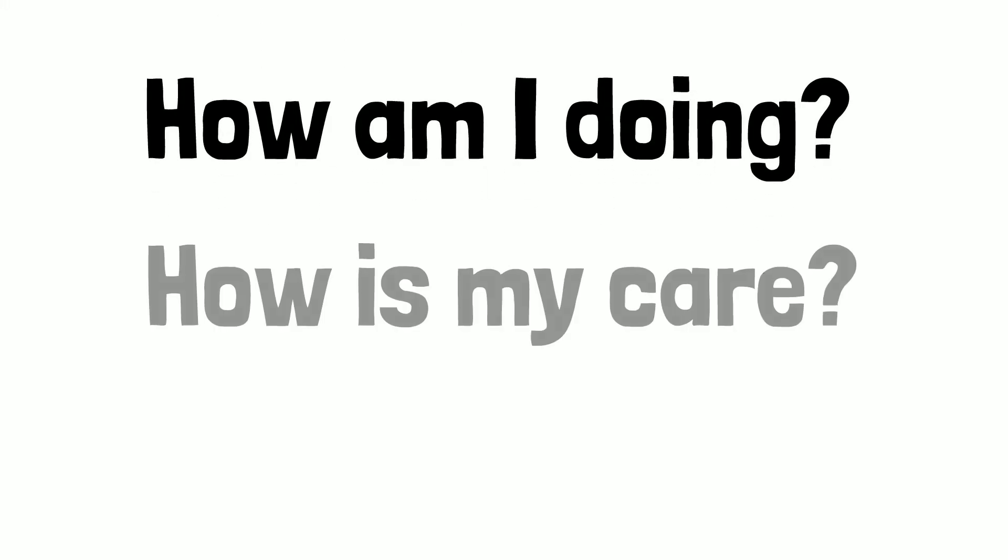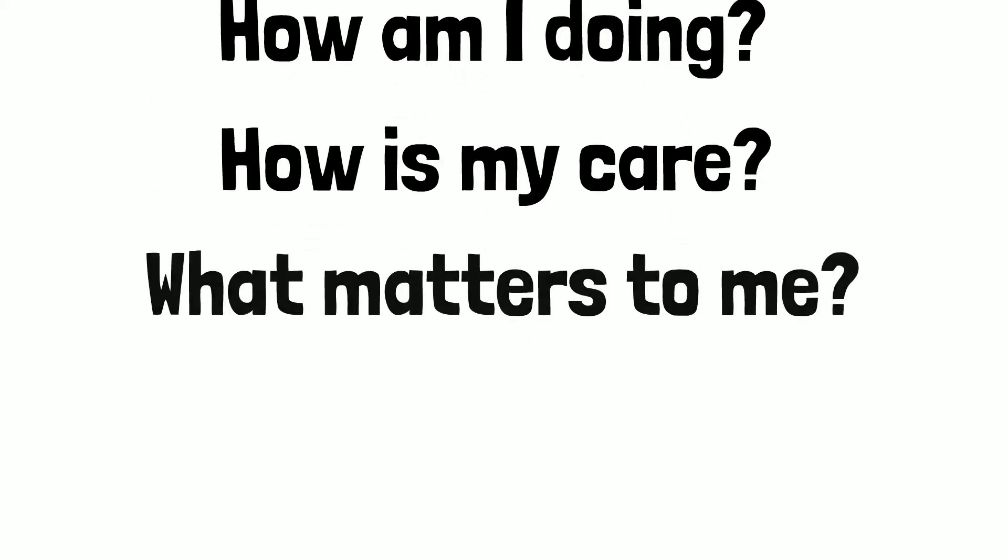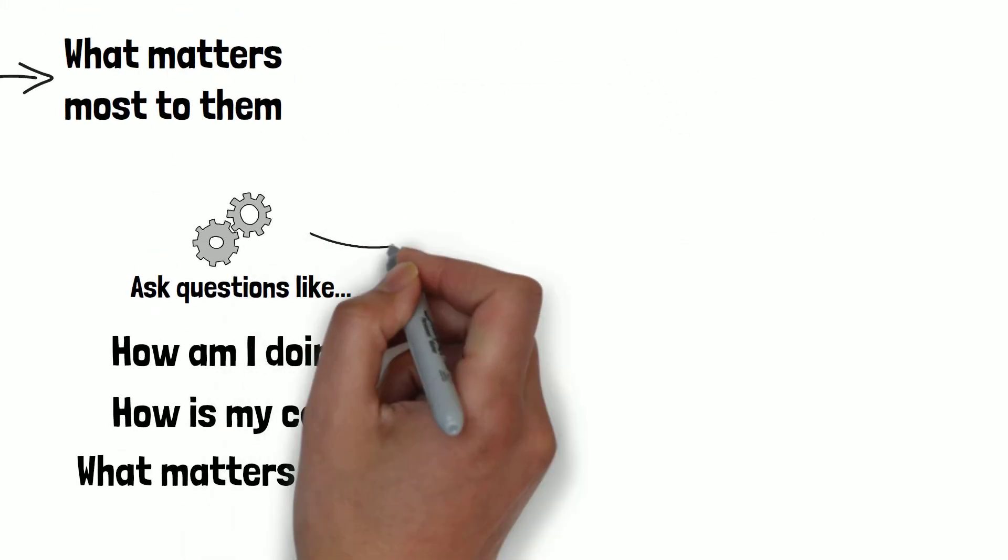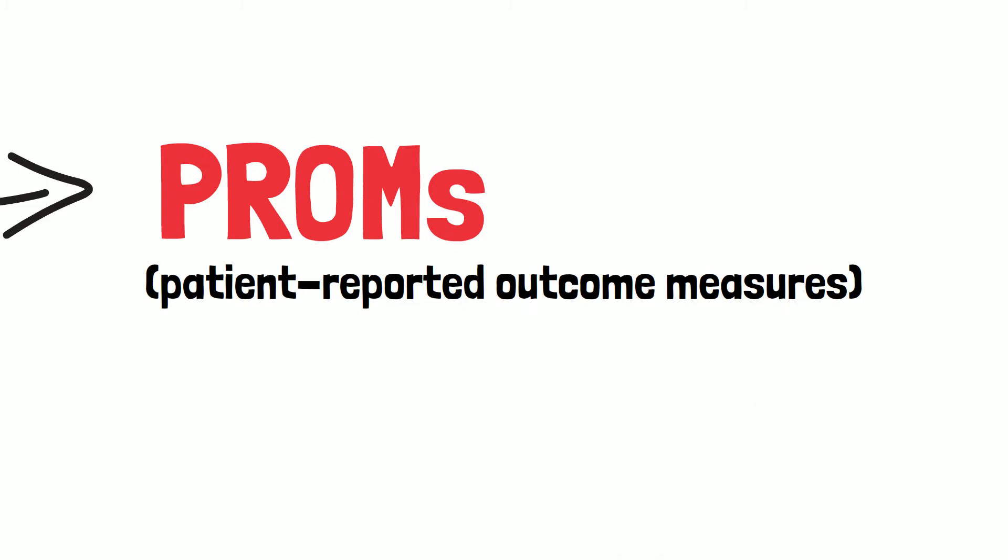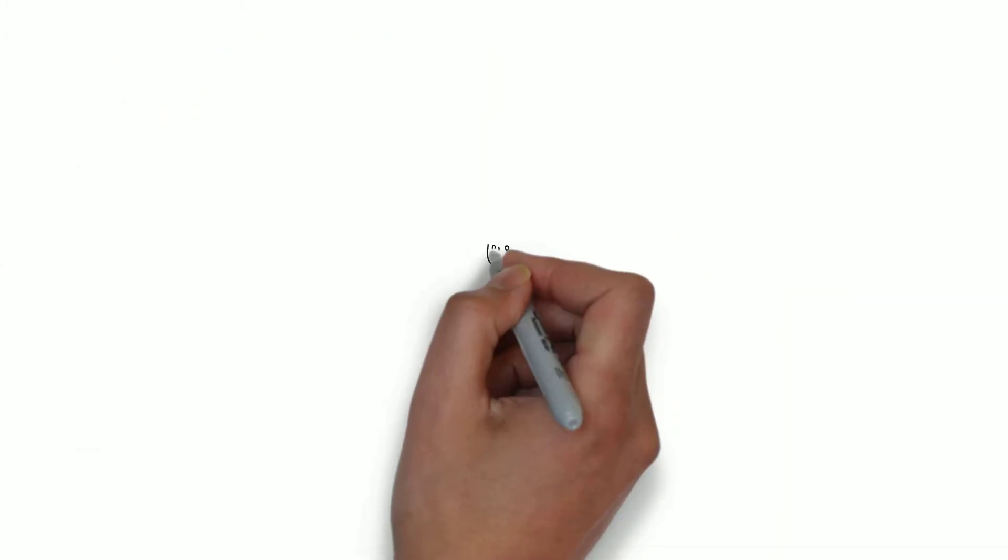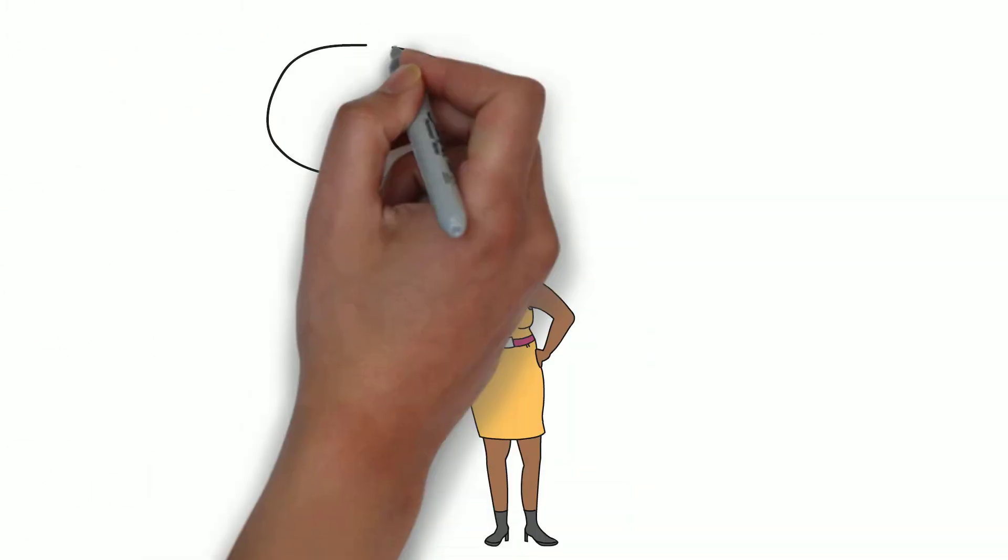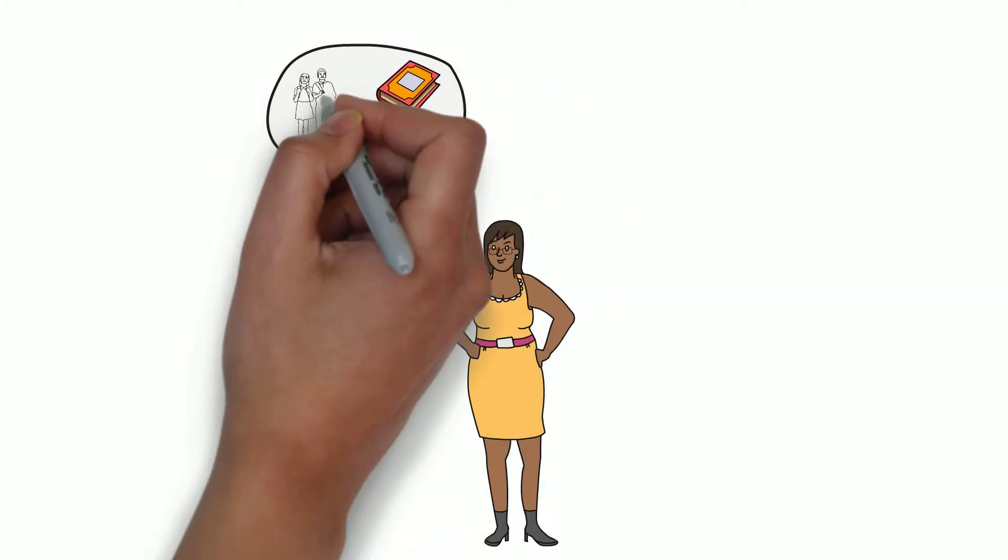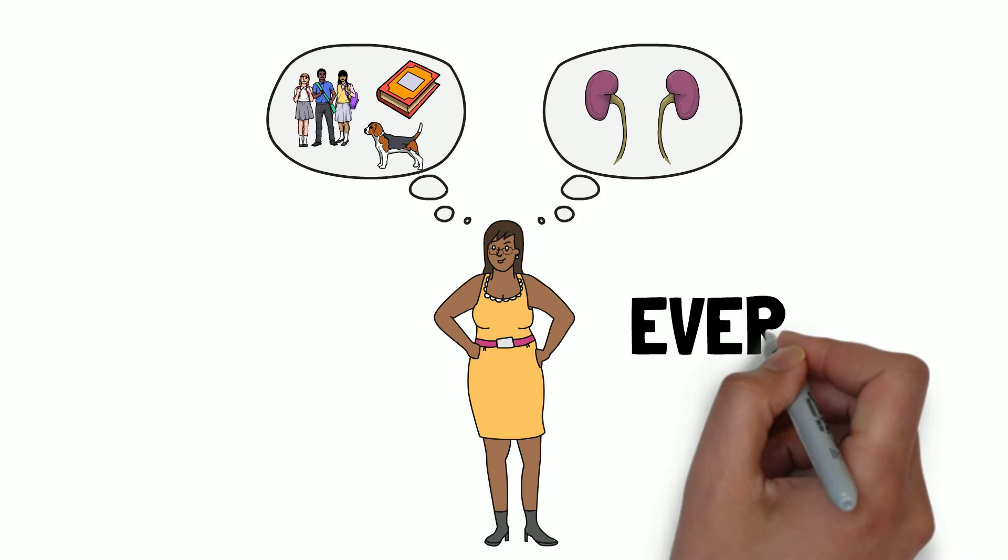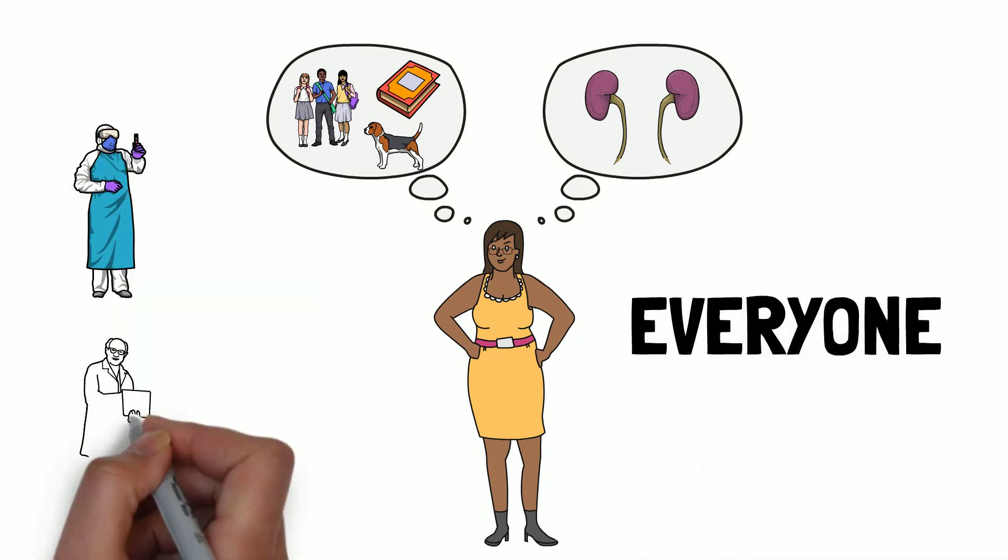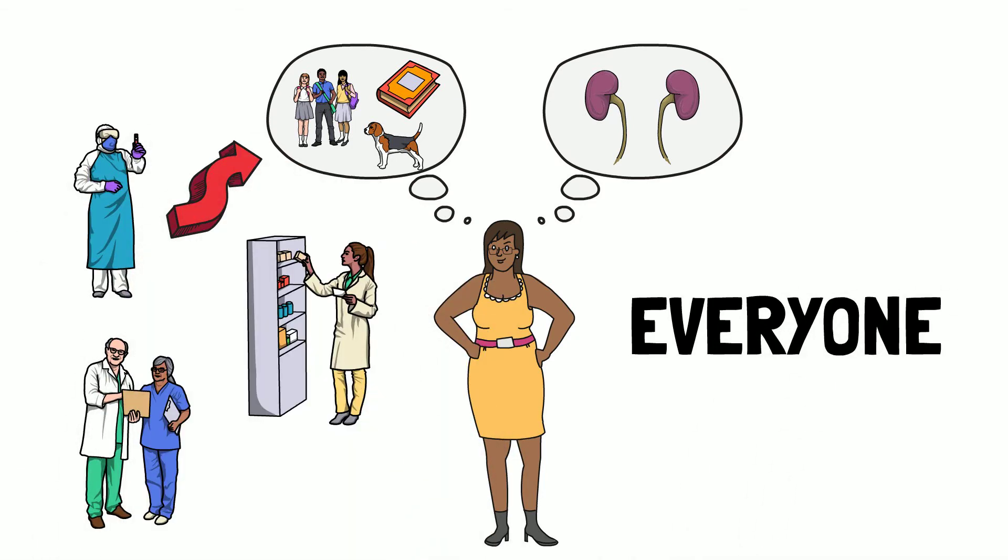How am I doing? How is my care? What matters to me? These tools are often referred to as PROMs, that is, patient-reported outcome measures. For people living with kidney disease, these tools ask questions that help them think about their whole life and not just their kidneys. What's more, it helps everyone involved to focus on what matters most to that individual.